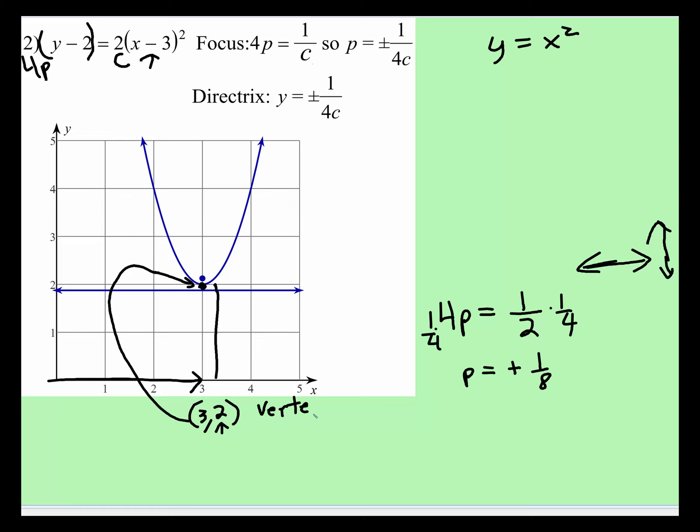And now, I know that I have to add 1/8 to this vertex point right here. So this is the vertex, and since it's opening upwards, the focus value will be 3, 2 plus 1/8. 2 is the same thing as saying 16 over 8, plus 1/8, that gives us 17/8. And that's the coordinate point for the focus.